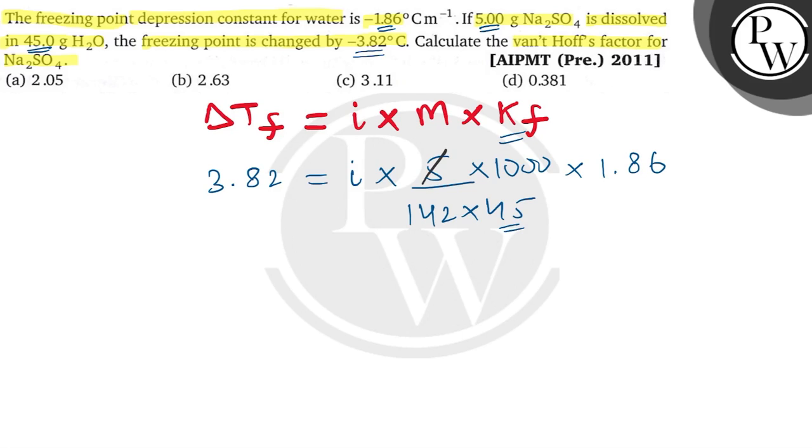Now let's further simplify. This doesn't simplify further, so let's write it in simple form: 3.82 into 9 into 142 upon 1860. When we calculate this approximately, this comes out to be 2.63.